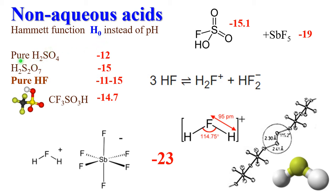So if you take pure sulfuric acid, you will have an H₀ of minus 12. This is not pH — you cannot have an H⁺ concentration of 10¹². This is the relative strength of the acid. You are moving in acidity the same way as you move from diluted sodium hydroxide to H⁺, and then the same jump in acidity from 1 molar sulfuric acid to pure sulfuric acid.